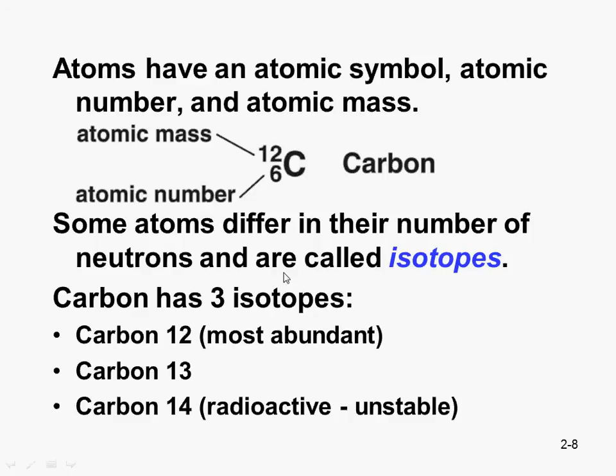Now some atoms differ in the number of neutrons. And so if we had a carbon atom that had 7 neutrons plus 6 protons, we would call it carbon 13. If we had a carbon atom that had 6 protons and 8 neutrons, that would total up to an atomic mass of 14. And we would call it carbon 14. Carbon 14 just so happens to be radioactive and very unstable. So carbon has 3 isotopes. We could find carbon in the most abundant form, carbon 12. Most carbon atoms have 6 neutrons and 6 protons. But some have 7 neutrons and some have 8 neutrons.